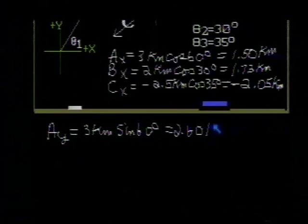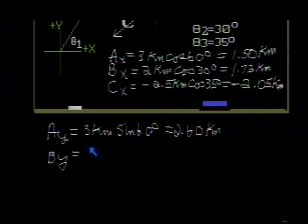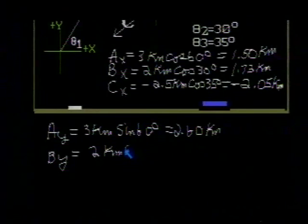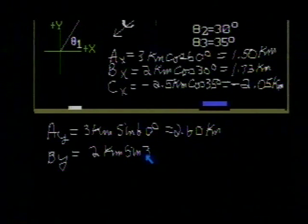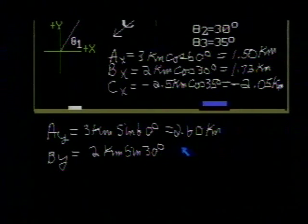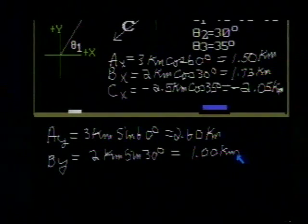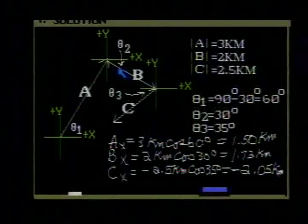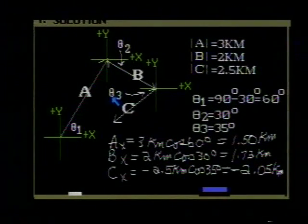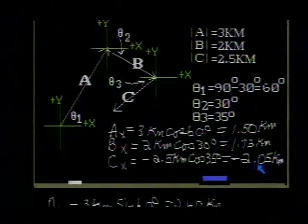B sub y, the magnitude of B, 2 kilometers, times the sine of 30 degrees. And that is simply 1. Now that is also in a negative direction. If we take a quick look at that, the y component of B is downwards and hence is negative. So I'm going to place then a negative sign on that. Our y component of B is negative.